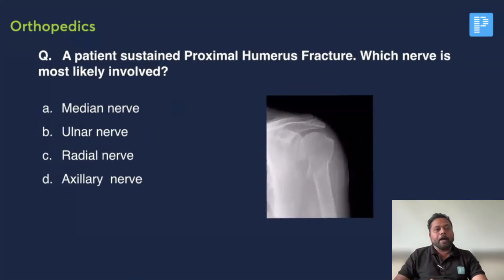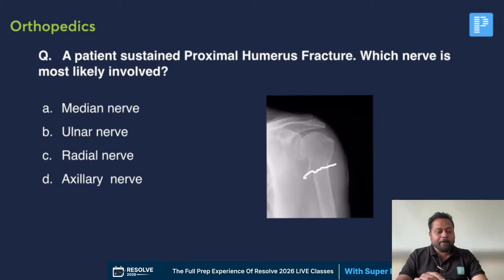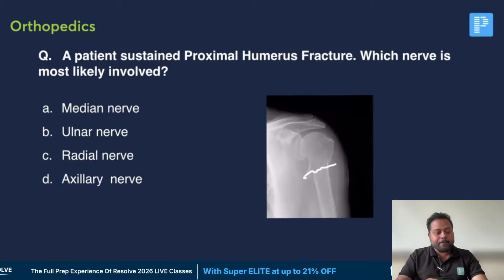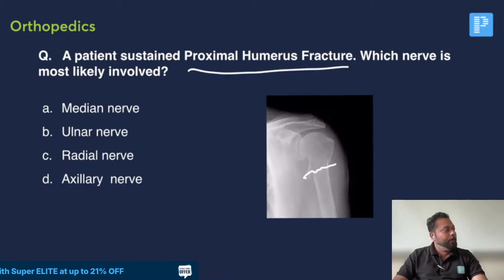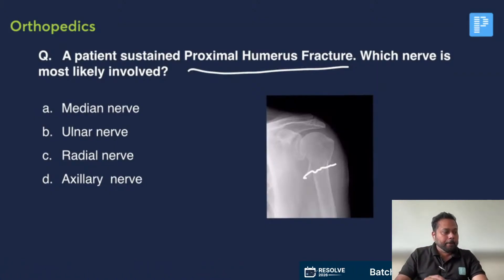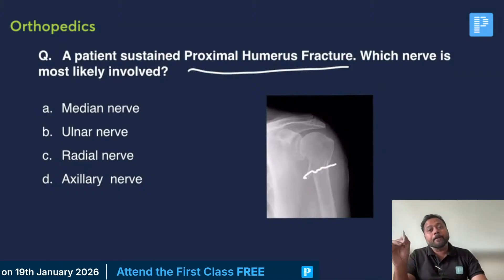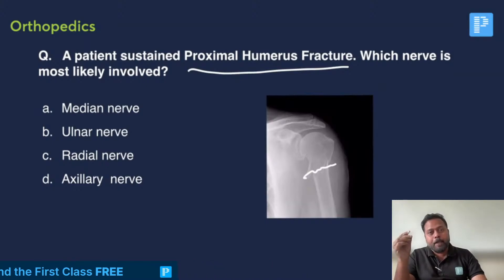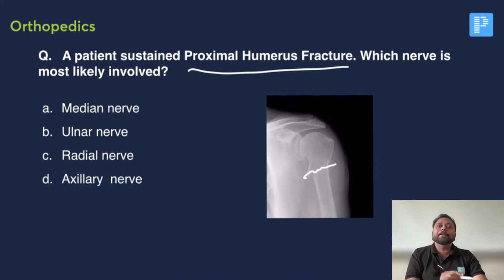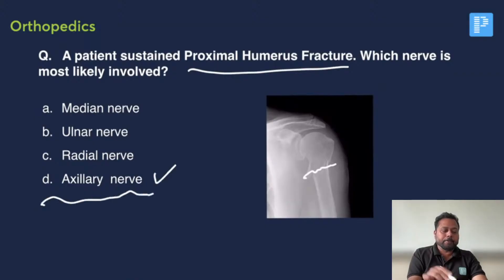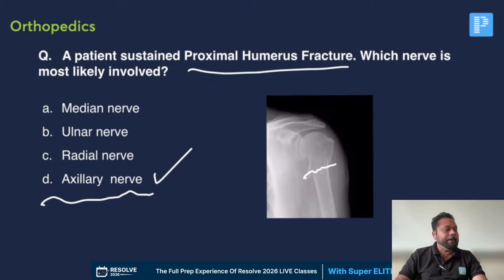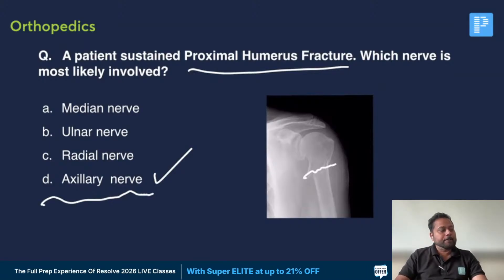One more question: they had given an X-ray showing a fracture in the proximal portion of the humerus. Which nerve is involved? If it is near the proximal end of the humerus — a proximal humerus fracture or shoulder dislocation — the answer should be the axillary nerve. Many of you answered axillary nerve correctly.